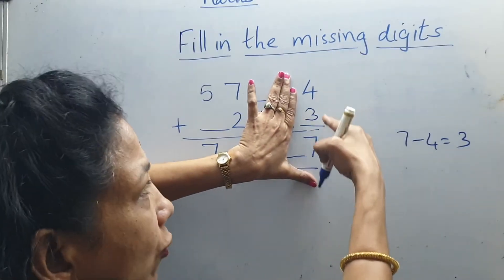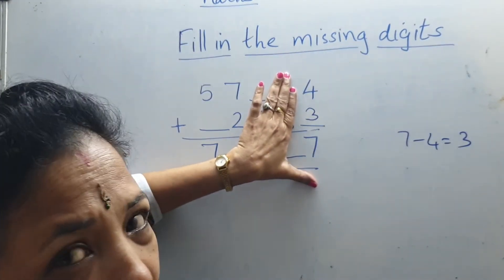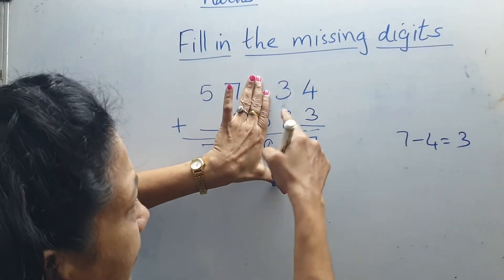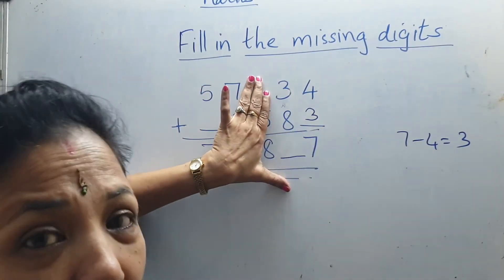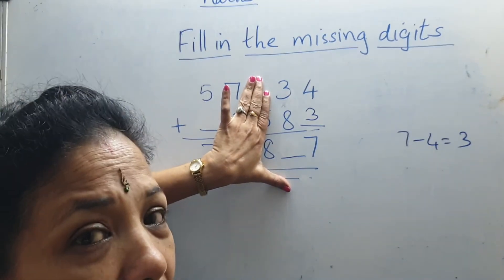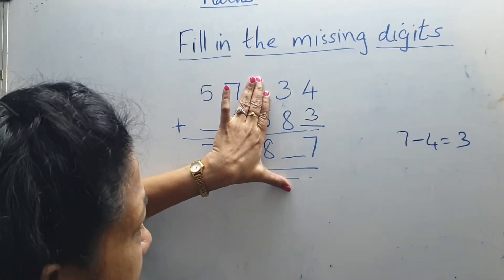Then you see what is 4 plus 3? 4 plus 3 we are getting 7. Now next number 3 8. 8 plus 3. What is 8 plus 3? 8 plus 3 is 11.